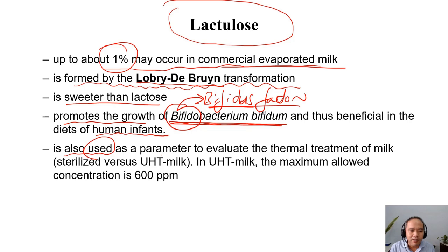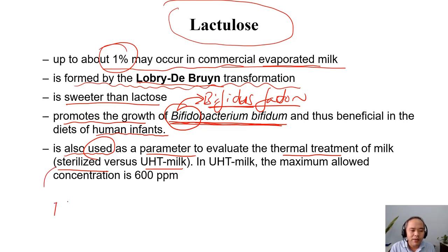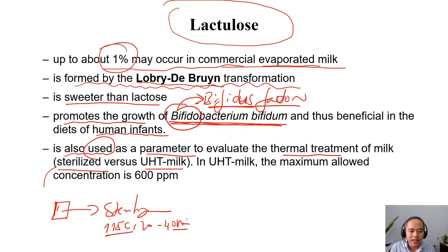Lactulose is also used as a parameter to evaluate the thermal treatment, to differentiate between, for example, normal sterilized milk and UHT milk. Normal sterilized means you put milk in the can already and then do sterilization — normally at 115 degrees C for 20 to 40 minutes. Because the milk is already in the can, we need a long time for heat to transfer. The temperature is not so high for sterilization in this method.